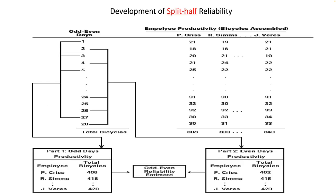A diagram shows how to use split-half reliability on a criterion measure: job performance. Some jobs lend themselves well to this given their quantitative output. In this example, employee productivity is measured every day and odd days are correlated with even days. Each person has an odd-day score and an even-day score — this is a simple Pearson correlation between two sets of scores for each worker.